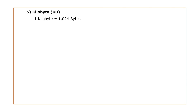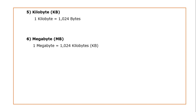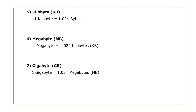The next memory unit is kilobyte, that is KB. So 1 KB is equal to 1024 bytes. The next one is a megabyte, that is MB, so 1 megabyte is equal to 1024 kilobytes. Next is a gigabyte, that is GB — 1 GB is equal to 1024 megabytes.